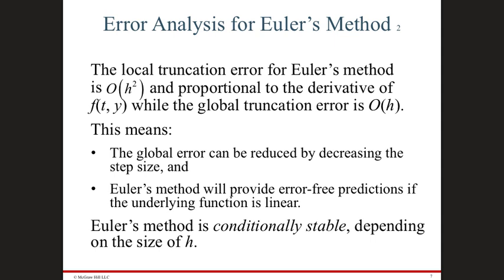For the Euler approach, the local error is of order h-squared. At any calculation step, the difference between the new computed value and the true value is proportional to h-squared, which means as h gets smaller, it decreases very quickly. The accumulated error from start to end is of order h. This is typical for numeric techniques using linear approximation — the local error is proportional to h-squared and the propagated error is proportional to h.